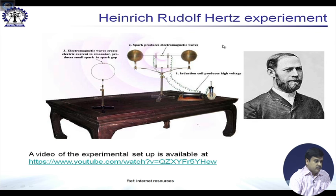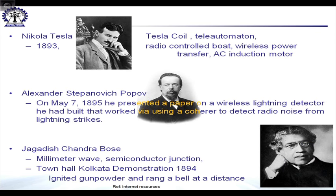Moving further, the next notable figure is Nikola Tesla, one of the scientific geniuses who invented many things, among which the Tesla coil is well known. Around 1893, he proposed tele-automation, demonstrating radio-controlled boats. He was mainly interested in wireless power transfer, which is almost a reality today, and was one of the pioneers of AC induction motors. Around 1893, Tesla did one of the first experiments where energy could be transmitted from one point to another by electromagnetic waves.